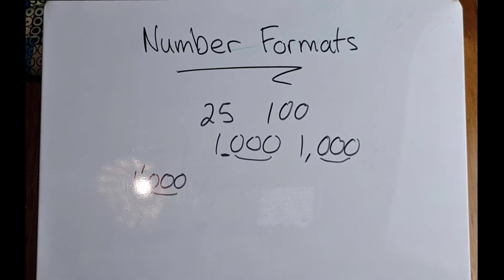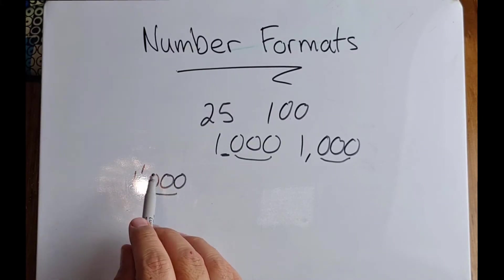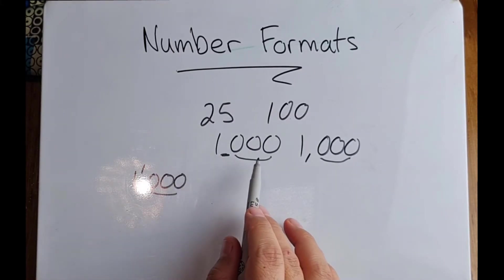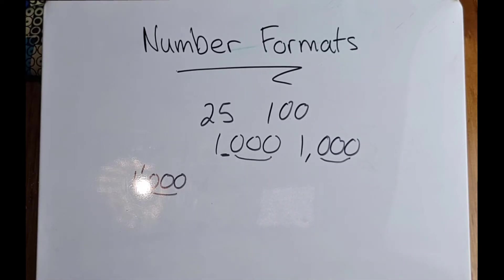In the case of the comma, it doesn't mean that we are dealing with decimals. That is not a decimal. It's just a way of separating the main number from the other three that have been grouped together.